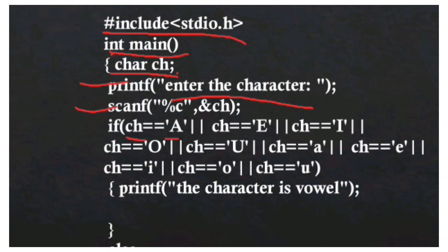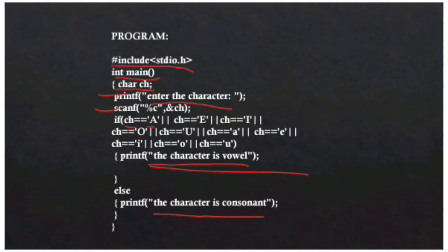We check the condition that the character equals a, e, i, o, or u in both uppercase and lowercase. If it is true, then the statement is executed which displays the character is a vowel; otherwise, the other statement is executed. Thanks for watching.